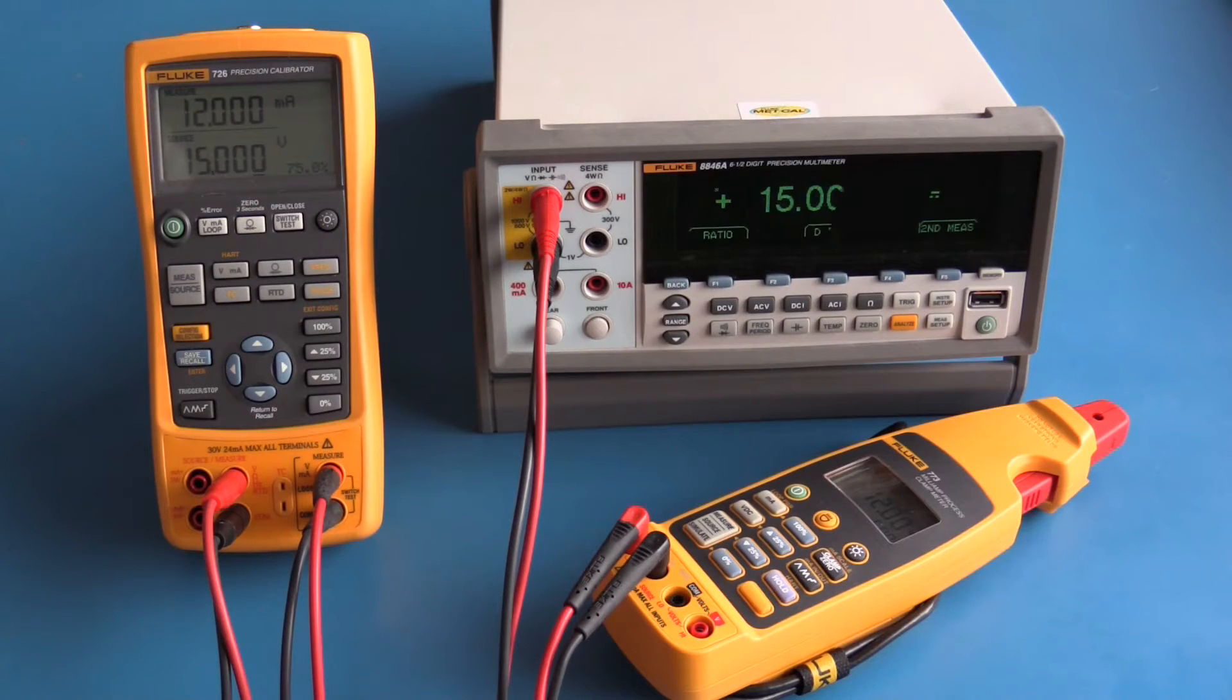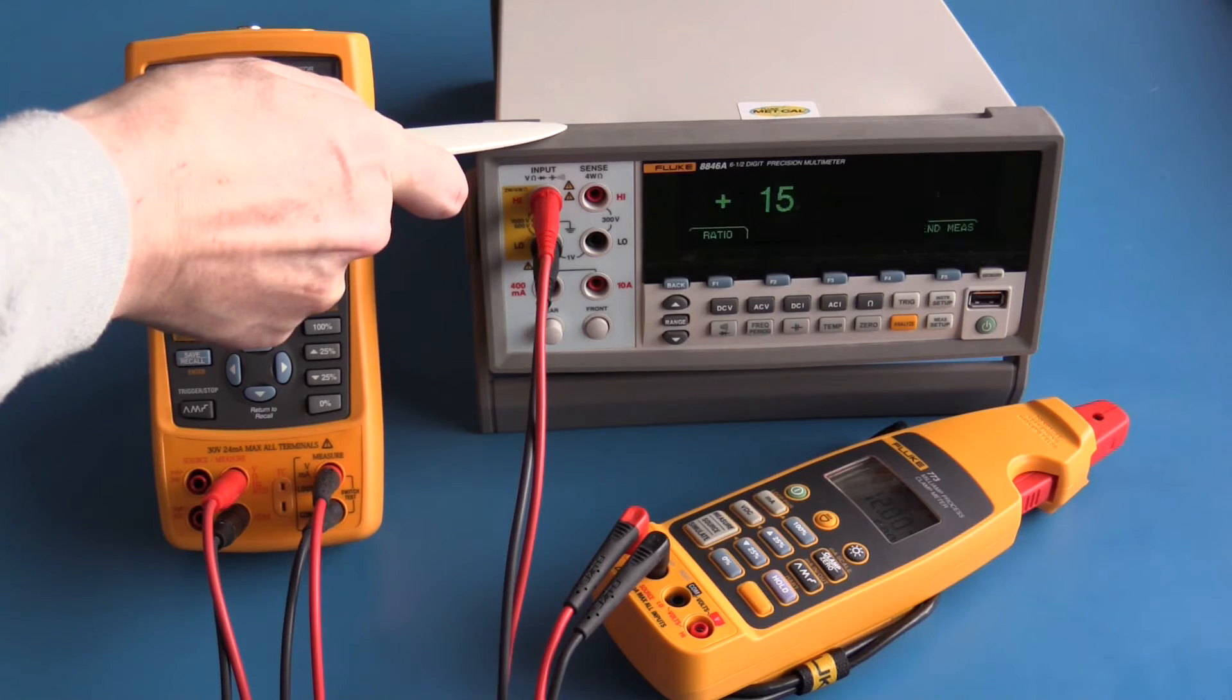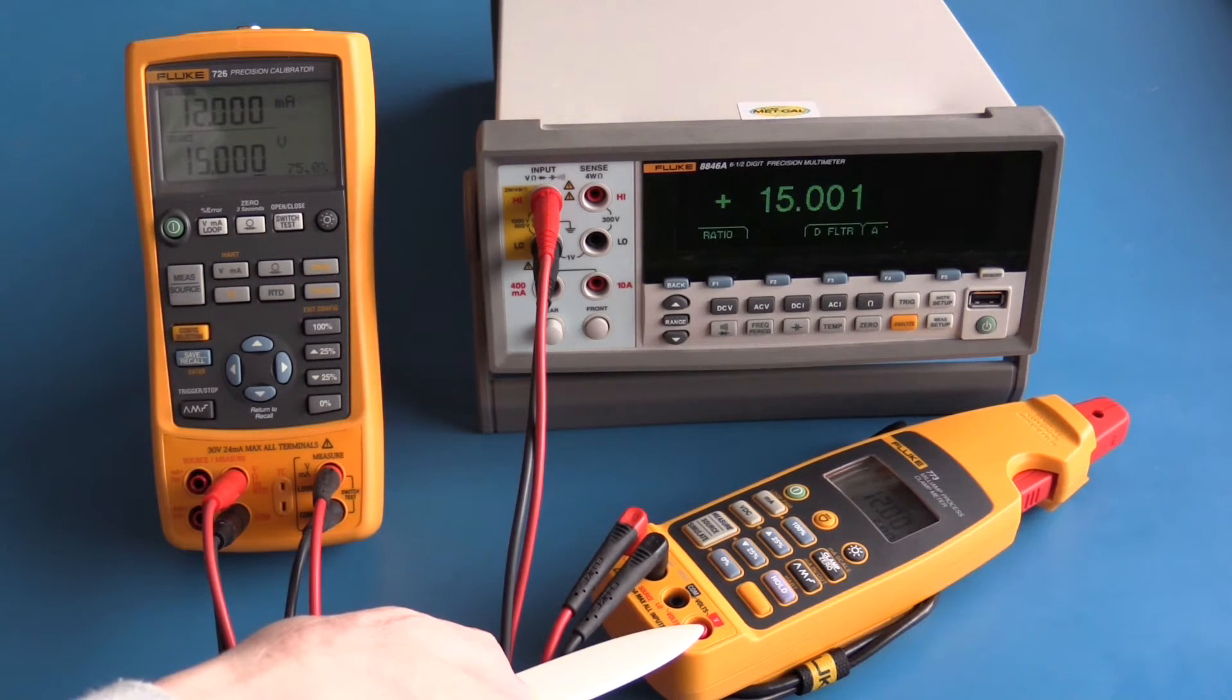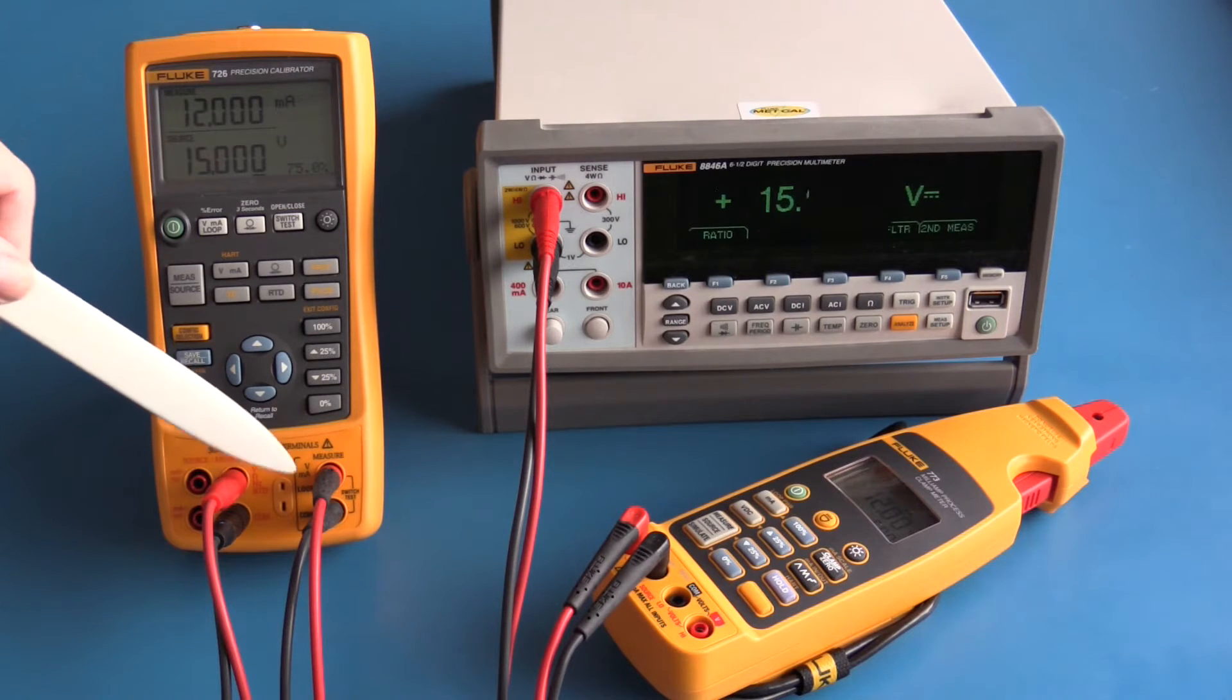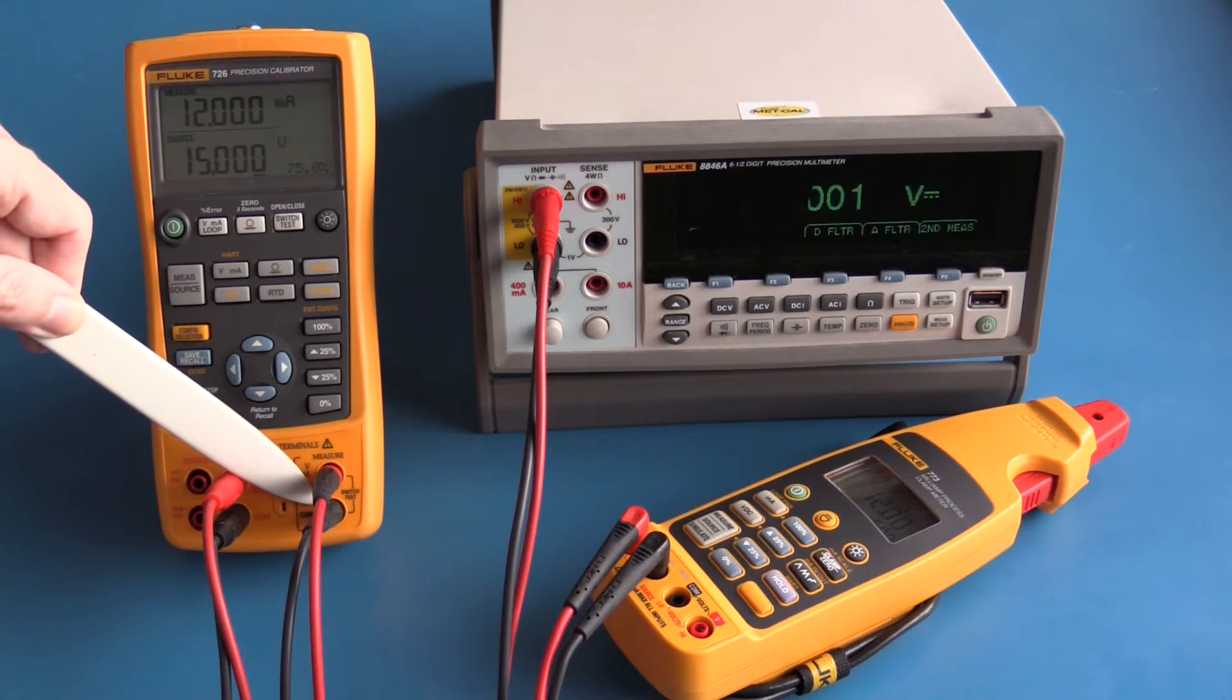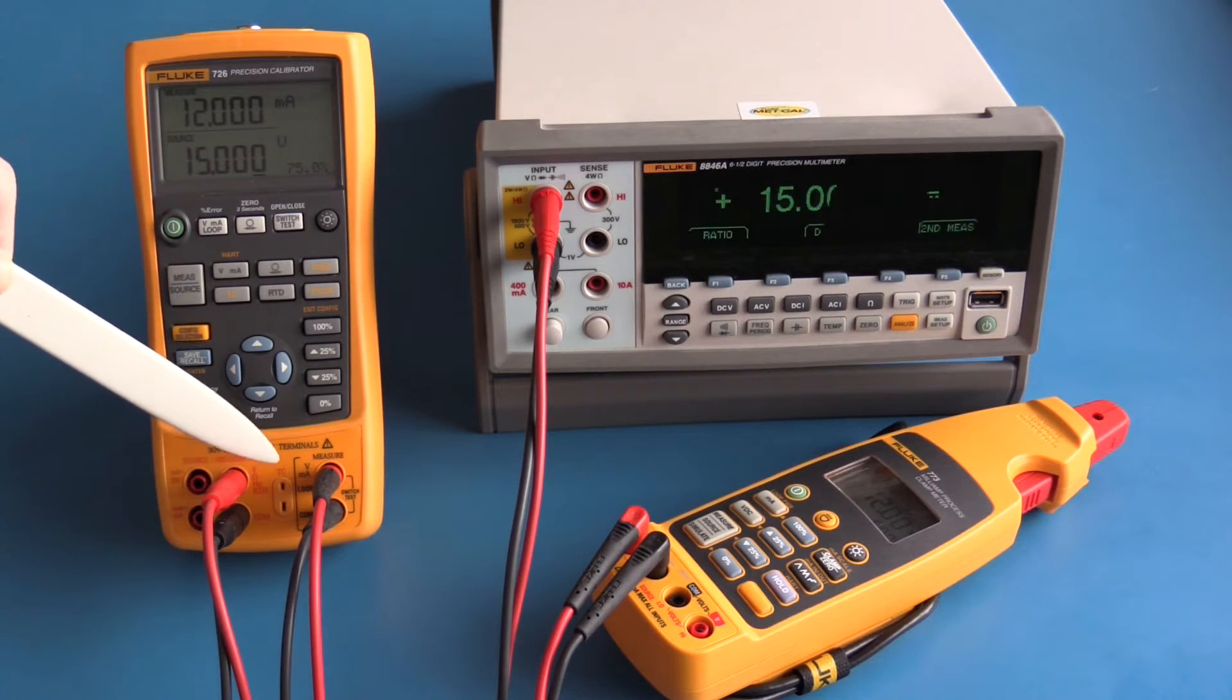On the bench here I have the Fluke 726 Precision Process Calibrator, a Fluke 8846a Precision Bench Multimeter, and a Fluke 773 Milliamp Process Clamp Meter. On the Fluke 726 we have two jacks here dedicated to measurement for temperature, and these four jacks can either measure or source.